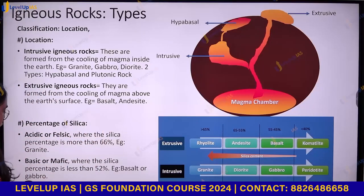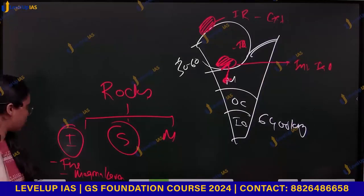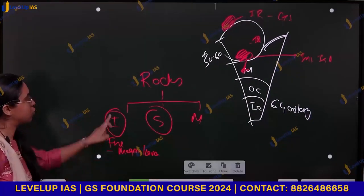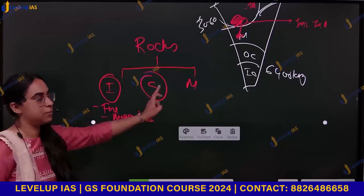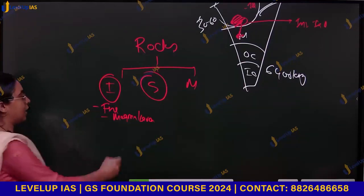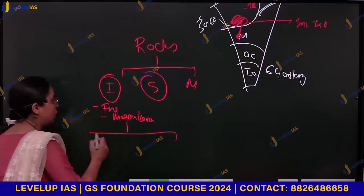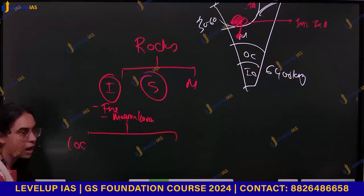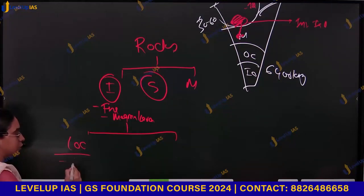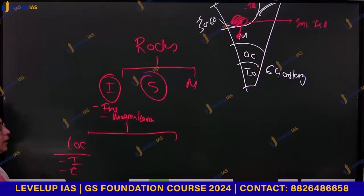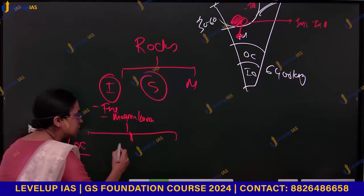I can classify igneous rocks in various ways. One classification is on the basis of location — are they intrusive, forming inside the crust, or extrusive, forming outside the crust? I can also classify igneous rocks on the basis of silica content.